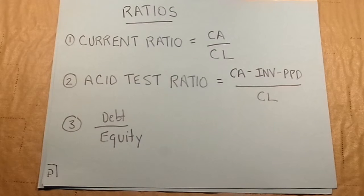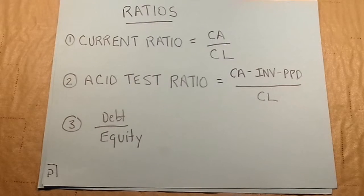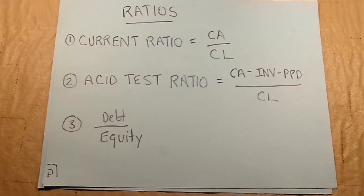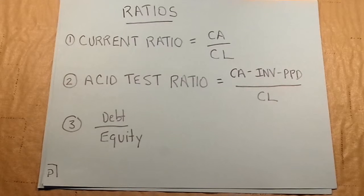We'll revisit ratios in chapter three. The classified balance sheet allows us to do a current ratio — current assets divided by current liabilities. It also allows us to do an acid test ratio, where we start with current assets, back off inventory and prepaids, and divide by current liabilities. If a company has inventory, I prefer the acid test ratio over the current ratio. I want to see if, even after inventory is backed out, there are enough other current assets to pay current liabilities.